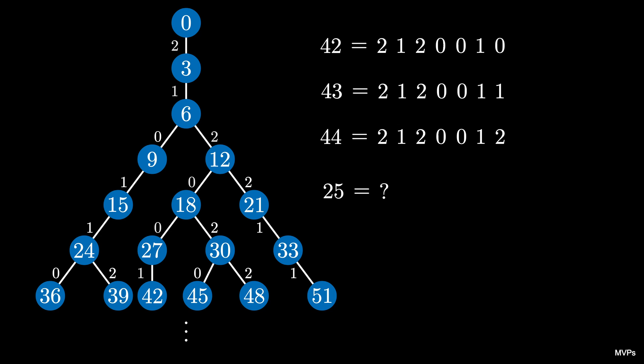25 is 1 more than 24, which is the multiple of 3. So we can look to the node 24 and start from the node 0 and follow the edge labels 2, 1, 0, 1, 1, and then because 25 is 1 more than a multiple of 3, we end with the digit 1.